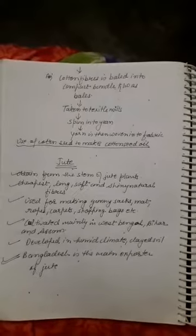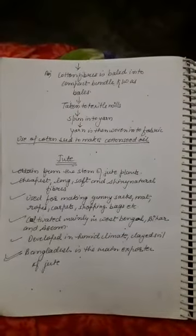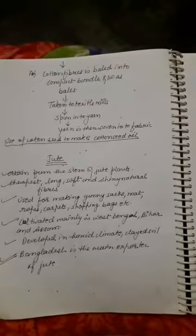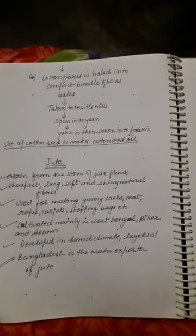From jute we make mats, ropes, carpets — the small rugs you see at home — and shopping bags. Jute is cultivated mainly in West Bengal, Bihar, and Assam. It develops in a high-humidity climate and in clay soil. Bangladesh is also a very large exporter of jute.